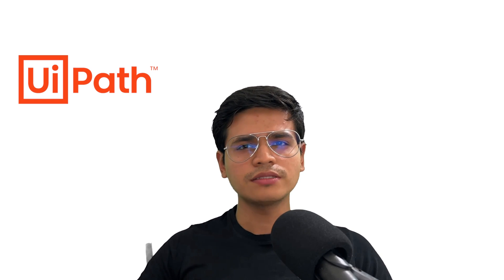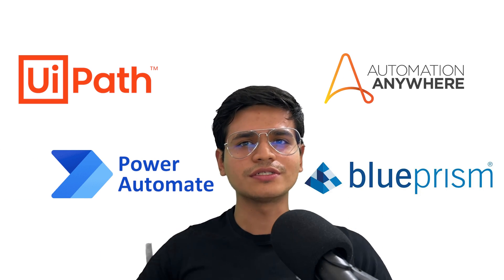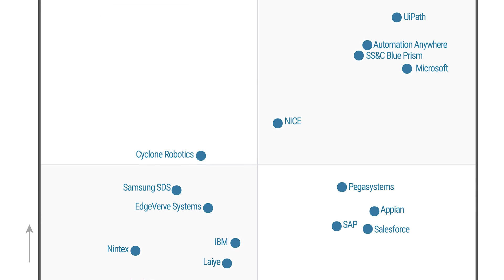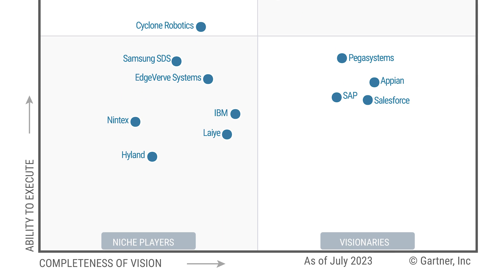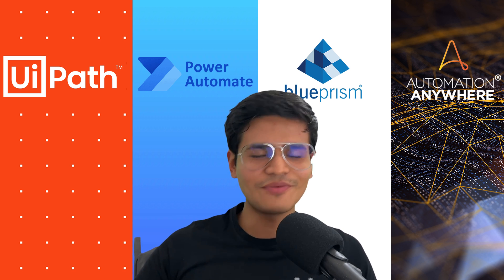What RPA tool is the best? UiPath, Power Automate, Automation Anywhere, or Blue Prism? Let's evaluate them. All four tools are leaders in the Gartner Magic Quadrant, which means they have been adopted by many companies and have successfully automated business processes. So which tool should you choose for your company? I have been testing each of them and I definitely have my favorite.